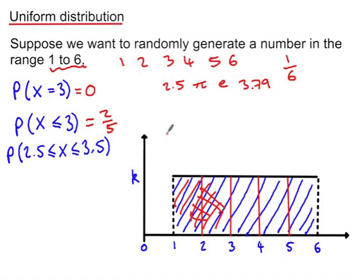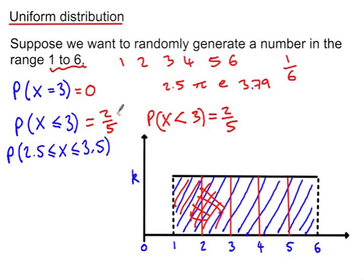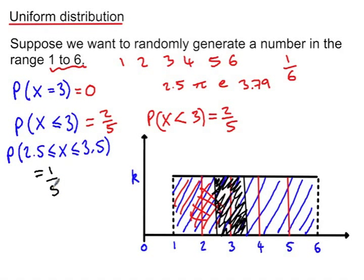Because of the nature of the distribution, it would make no difference if we said the probability that x is less than 3 — that would also be 2 fifths, because the probability of picking a particular number is negligible, so we say it's 0. So the probability of choosing a number between 2.5 and 3.5, represented by the black area, is 1 fifth.